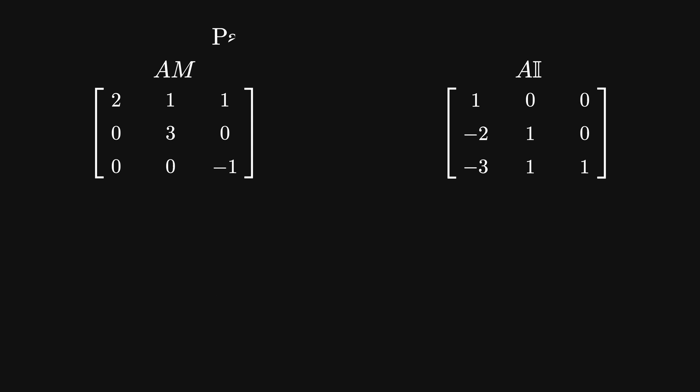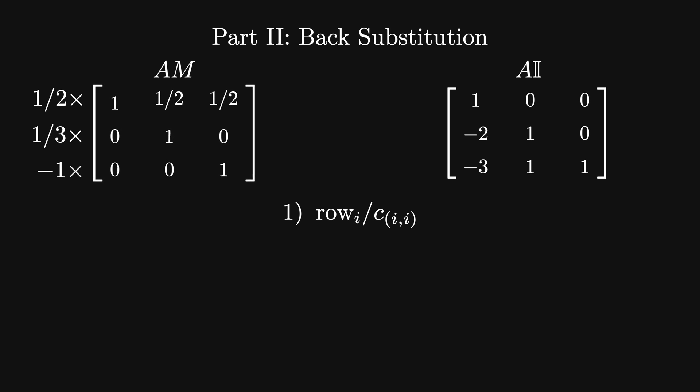I've chosen to break it up into two separate steps here, but they can easily combine into one step for a slightly faster algorithm. The first step is dividing each row by the value of its pivot. So that's 2 for row one, 3 for row two, and minus 1 for row three. That makes all entries along the matrix diagonal equal to one.